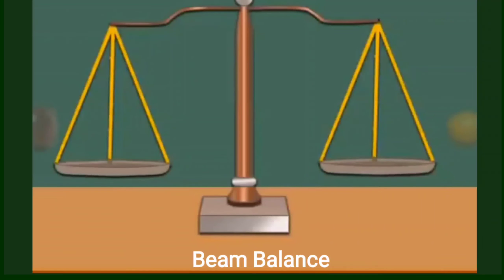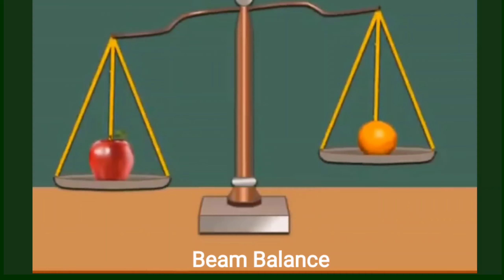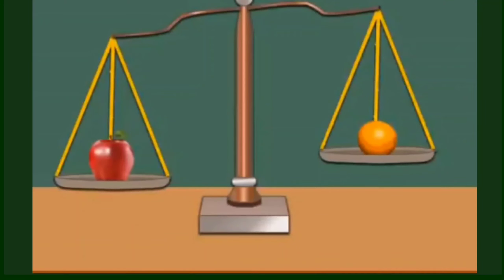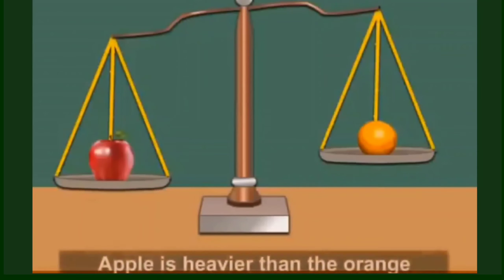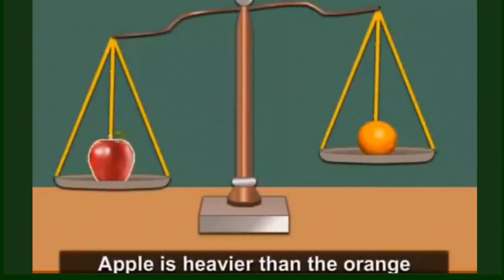It has two pans. When nothing is put on the pans, they remain at the same level. If we put the apple in one pan and the orange on the other pan, we can see that the pan containing the apple goes down and the other pan goes up. It means the apple is heavier than the orange. The pan containing the heavier object goes down.